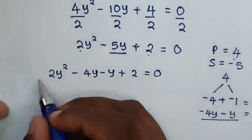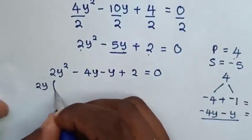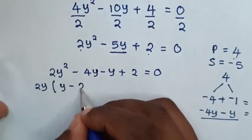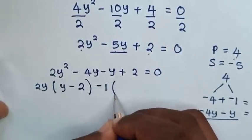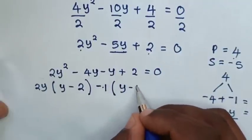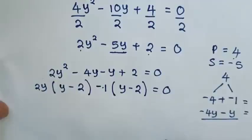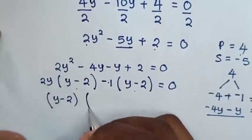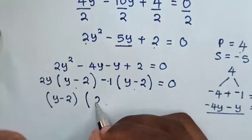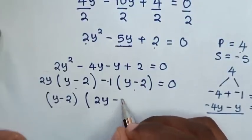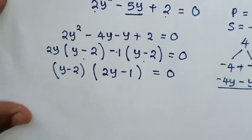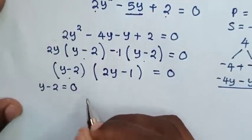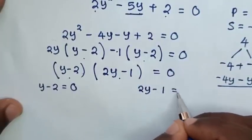From the first two terms, 2y is common: 2y(y minus 2). From the last two terms, negative 1 is common: negative 1(y minus 2). Since (y minus 2) is common, we factor it out to get (y minus 2)(2y minus 1) equals 0. This gives two solutions: y minus 2 equals 0, or 2y minus 1 equals 0.